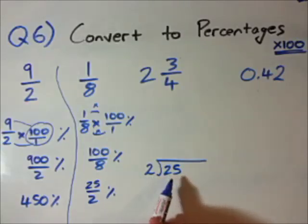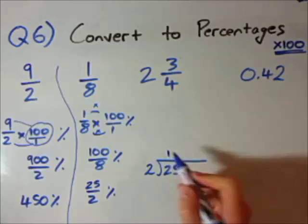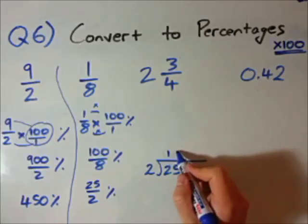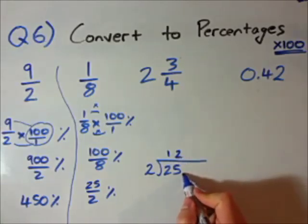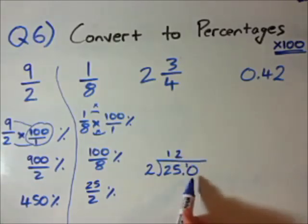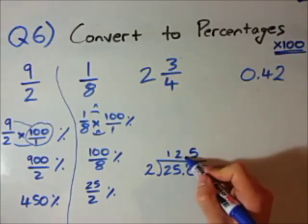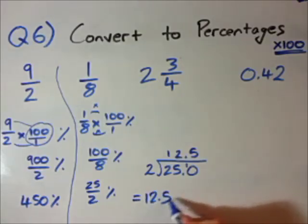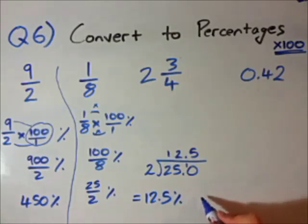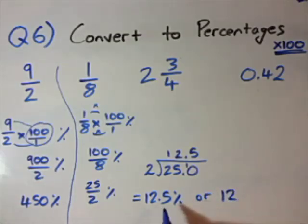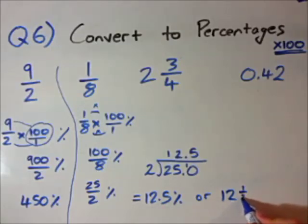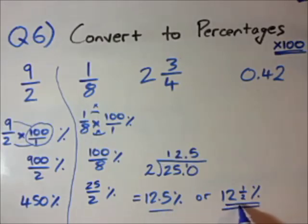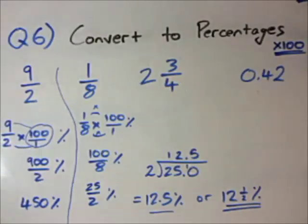So how many times does 2 go into 25? Well, how many times does 2 go into 2? It goes in it once. How many times does 2 go into 5? It goes in it twice with one remainder. So I'm going to have to do a decimal point and a 0 here. One remainder. How many times does 2 go into 10? 5 for a decimal point here. So our final answer would be 12.5%. Now this can also be written as 12 and a half percent. And this is probably how your teacher is going to like it. I'm personally fine with either of these. Your teacher is probably going to like this one better.